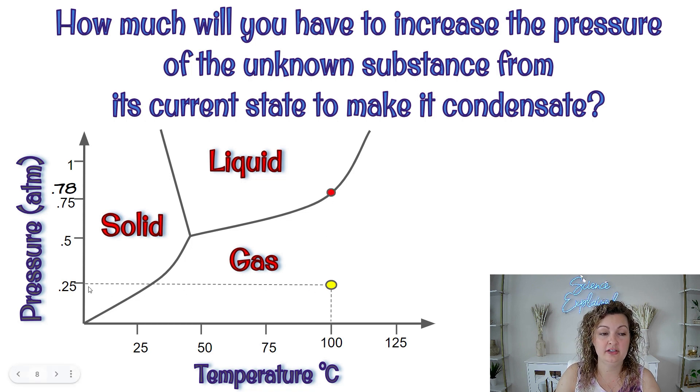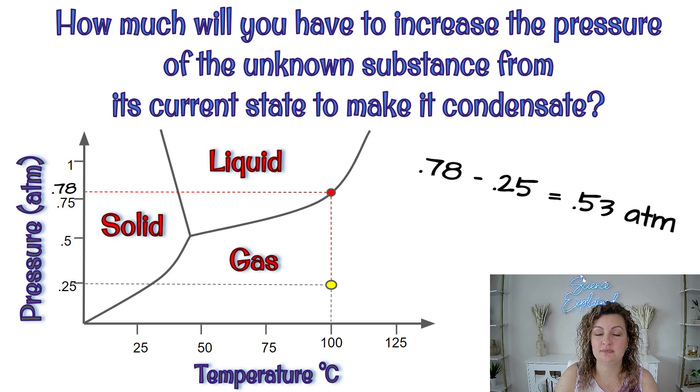You can see our starting pressure is 0.25 atmospheres. So we need to increase the pressure now maintaining the same temperature. And you can see our new pressure is roughly about 0.78 atmospheres. So again, we're just going to subtract. So 0.78 atmospheres minus our 0.25 atmospheres. We need to increase the pressure by 0.53 atmospheres in order to get it to condensate at the same temperature, 100 degrees Celsius.